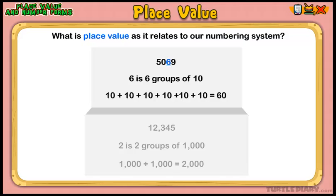Let's look at one more example before we move on. In the number 12,345, the 2 refers to 2 groups of 1,000 because the 2 is in the 1,000s place.